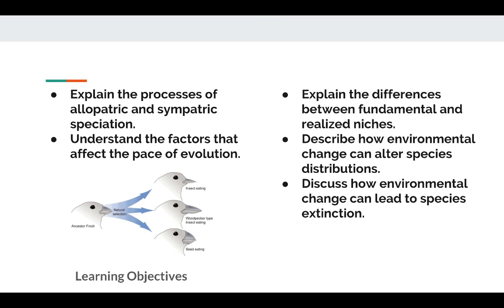We're going to close out the lecture looking at how evolution alters the traits that species express, and because different traits perform well in some environments and not in others, we'll look at how evolution affects where species are able to live on Earth. Especially as environments are changing, we'll examine how species are altering their distributions. This also suggests that environmental changes in the future are going to continue to affect distribution of species, including how global climate change is affecting whether species will adapt or become extinct.